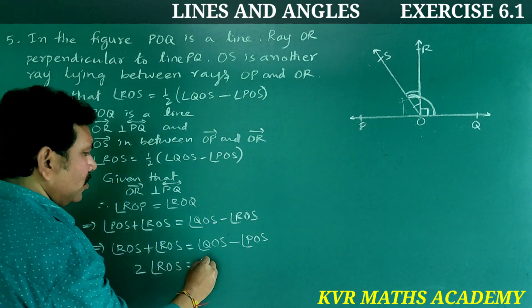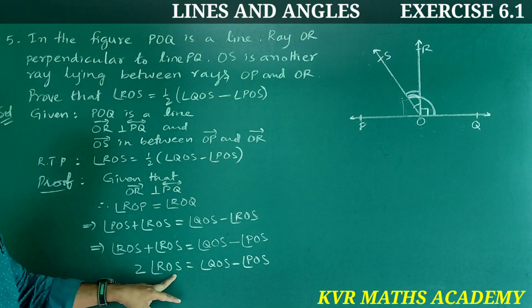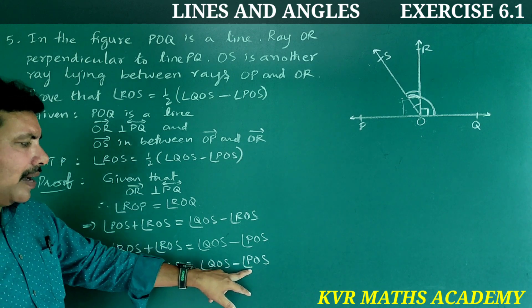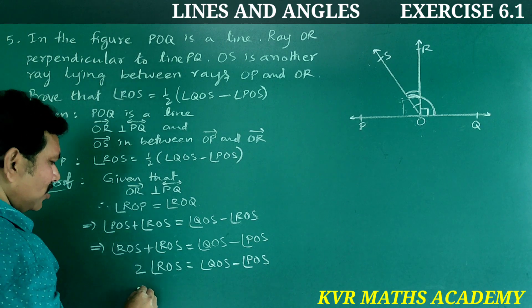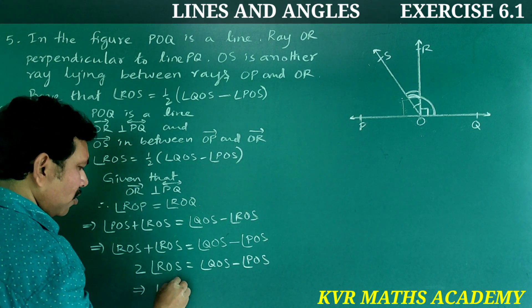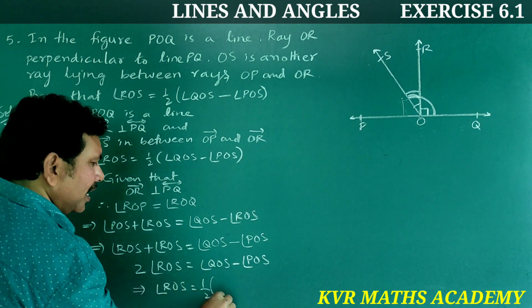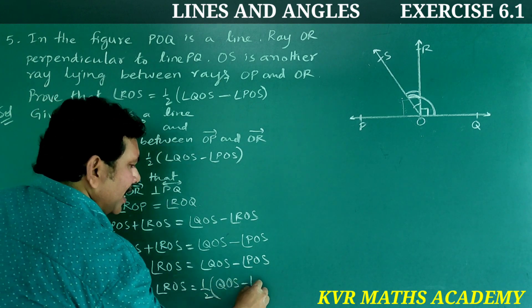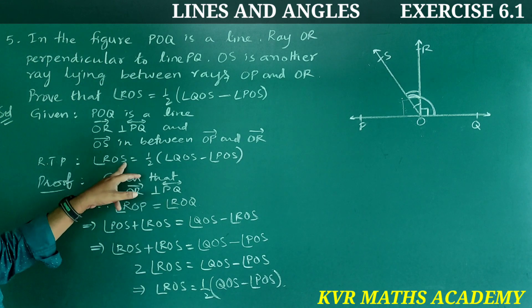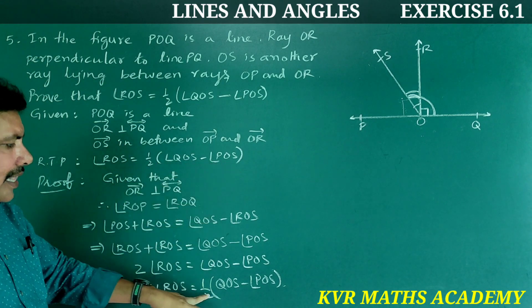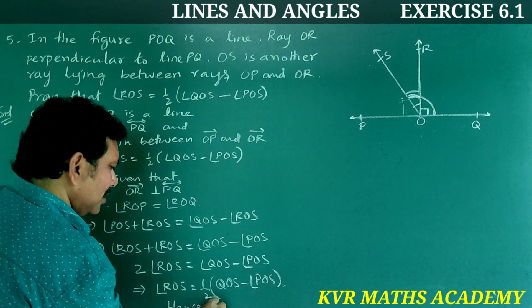Therefore, 2 times angle ROS is equal to angle QOS minus angle POS. That implies angle ROS is equal to half of angle QOS minus angle POS. Hence proved.